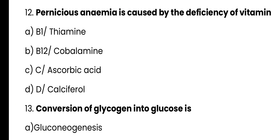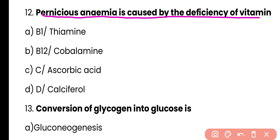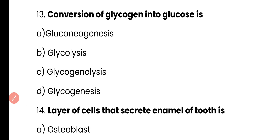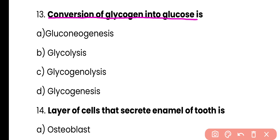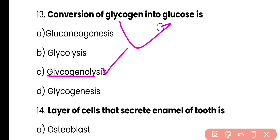Question 12: Pernicious anemia is caused by deficiency of — Vitamin B1/thiamine, Vitamin B12, Vitamin C, or Vitamin D. Correct answer is option B — deficiency of Vitamin B12 (cobalamin) causes pernicious anemia, in which red blood cell formation fails. Question 13: Conversion of glycogen into glucose is — glyconeogenesis, glycogenesis, glycogenolysis, or glycogenesis. Correct answer is option C — when glucose levels are low, glucagon stimulates glycogenolysis, in which glycogen is converted into glucose.